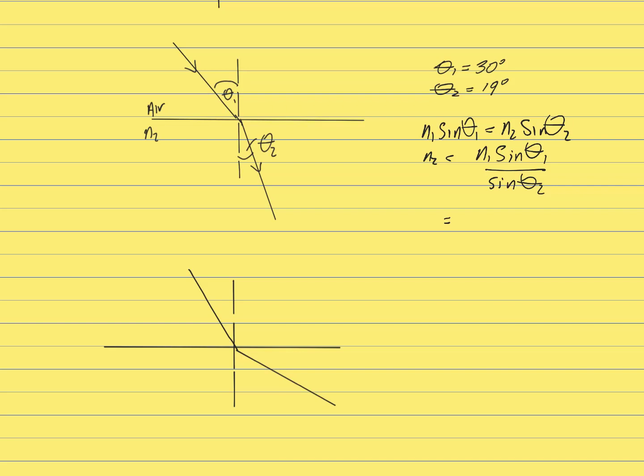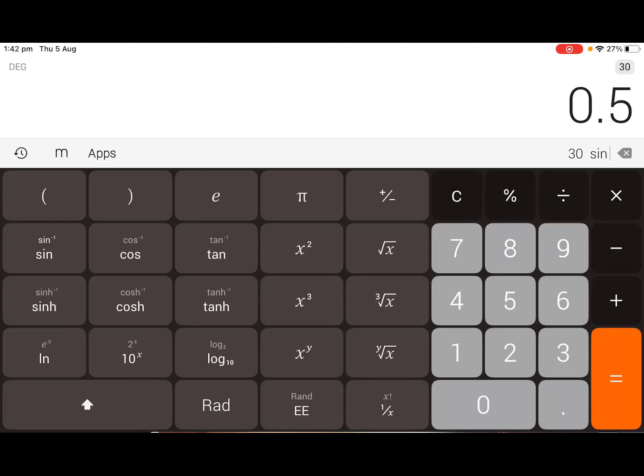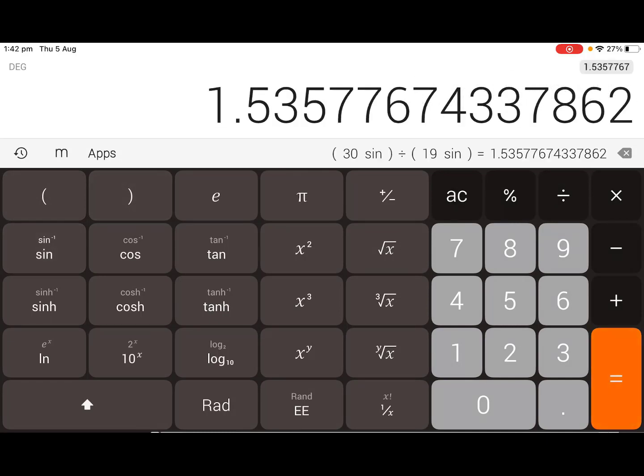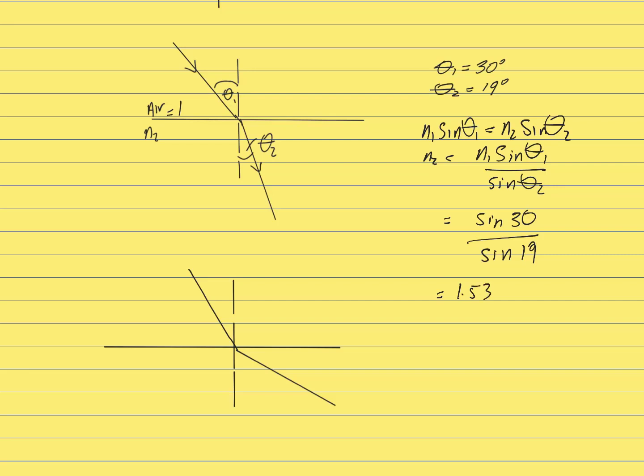So we can go ahead and substitute. N1 is just 1, so the refractive index of air is 1. We've got the sine of 30 divided by the sine of 19. So this is where you're going to have to use your scientific calculator. Bracket 30 sine, close bracket, divided by bracket 19 sine, bracket, equals, and we've got 1.53. That was N2. N2 equals 1.53.